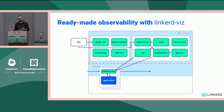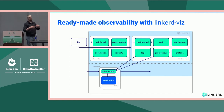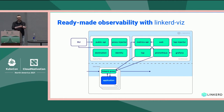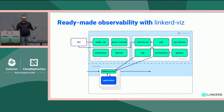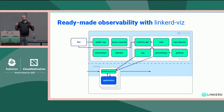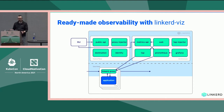We have a Viz extension, for instance, that bundles Prometheus, Grafana, the Linkerd dashboard, and a system called TAP which lets you connect to proxies while they're running and query requests as they flow. You can also bring your own Prometheus. These things used to be part of Linkerd's core control plane, but really you don't need them to get started — they're all gravy once you have Linkerd running.